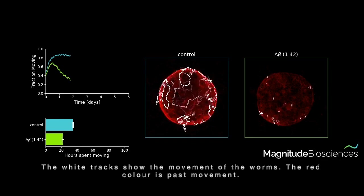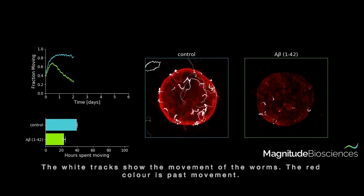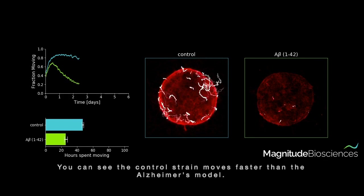The white tracks show the movement of the worms, the red color is past movement. You can see the control strain moves faster than the Alzheimer's model.